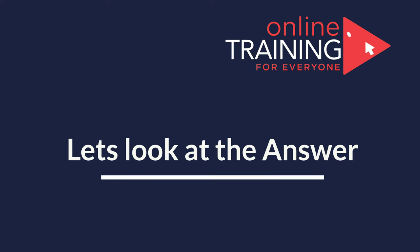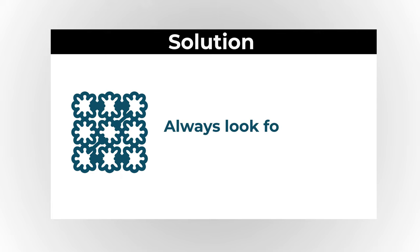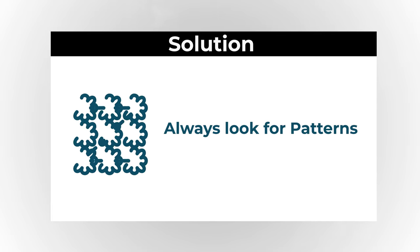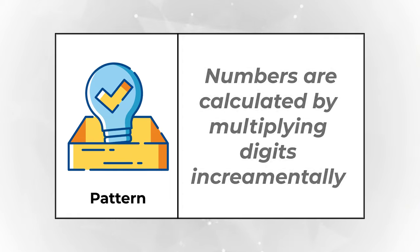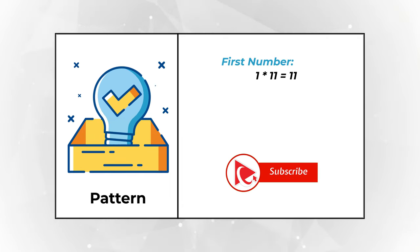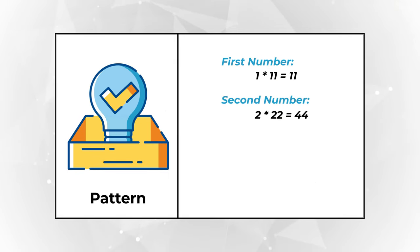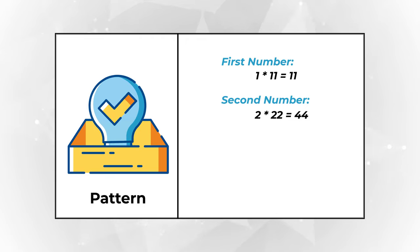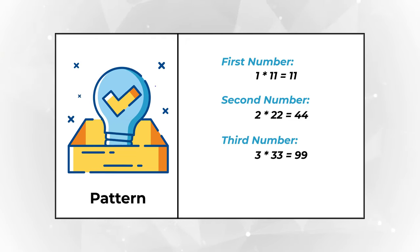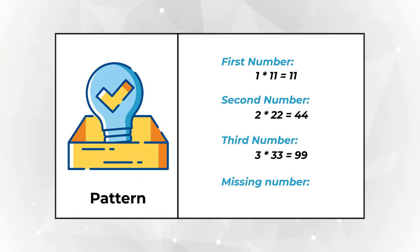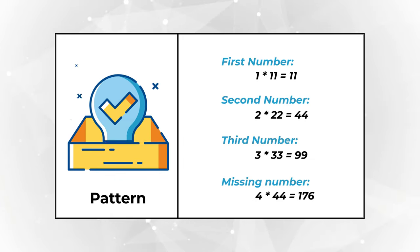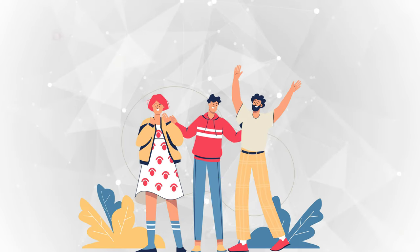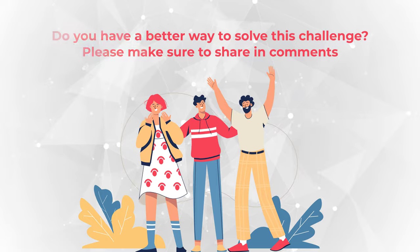The solution is rather simple — you just need some creativity. Always look for patterns. The first three numbers are calculated by multiplying single digits incrementally: 1 × 11 = 11; 2 × 22 = 44; 3 × 33 = 99. So the missing number is 4 × 44, which equals 176. The correct choice is choice D, 176. Hopefully you've nailed this question and now know how to answer similar problems on the test.